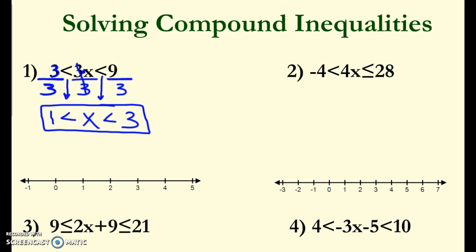Now remember back to the last video — we're going to have our circles at 1 and at 3, and both of those are going to be open circles because we have just less than for both. Thinking back to the last video and our notes, when we have x kind of in between like this, we get that dumbbell look to it, so we're going to draw it just like that.